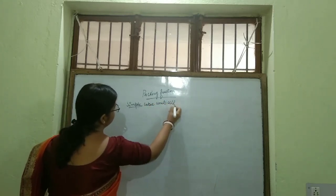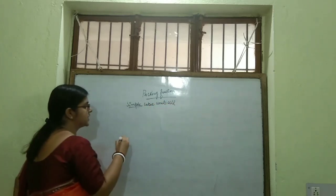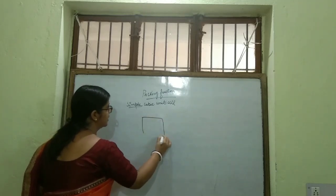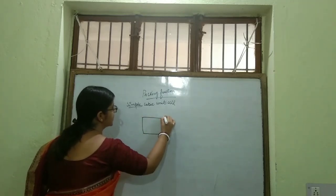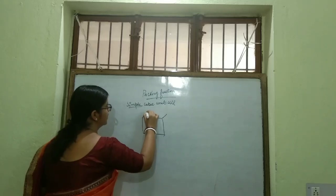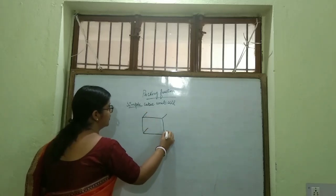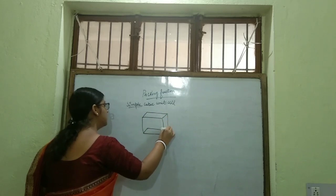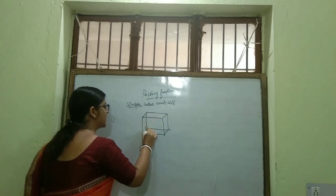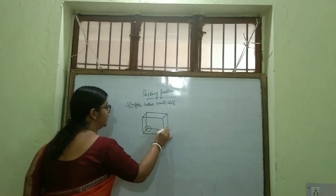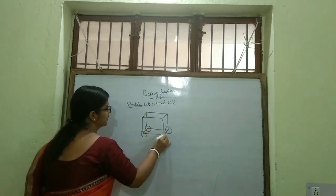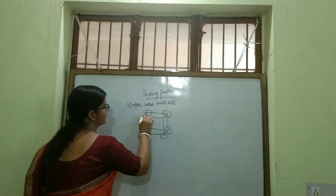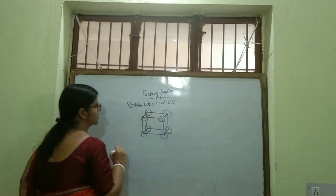Simple Cubic is also known as Primitive Unit Cell. In a Primitive Unit Cell, where will be the position of the particles? We all know that the particles are present only at the corners.